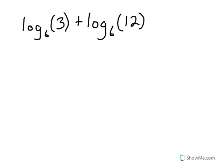Looking at this first example, we have log base 6 of 3 plus log base 6 of 12. Since we're adding two separate logarithms, we can combine them into one logarithm with the same base of 6, and then multiply the 3 and the 12 together. This is an example of condensing using the product property.